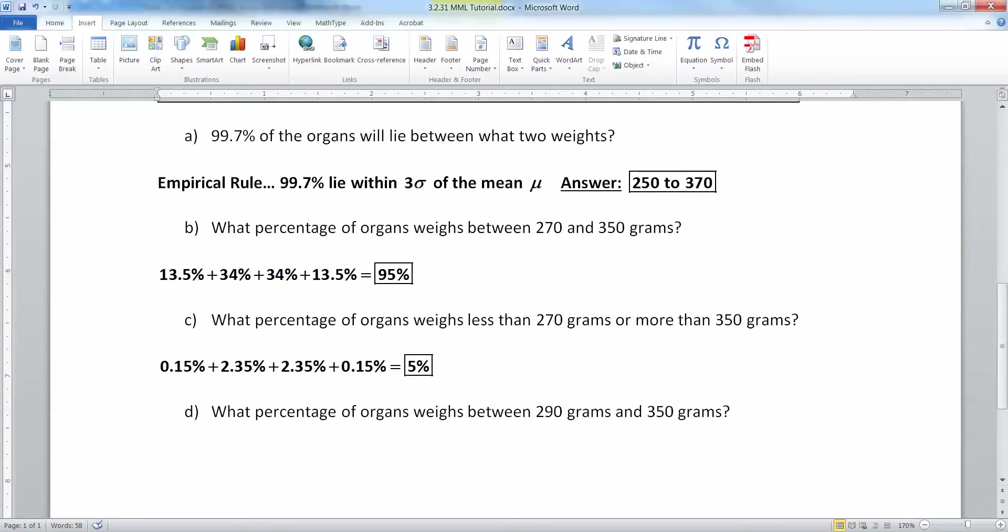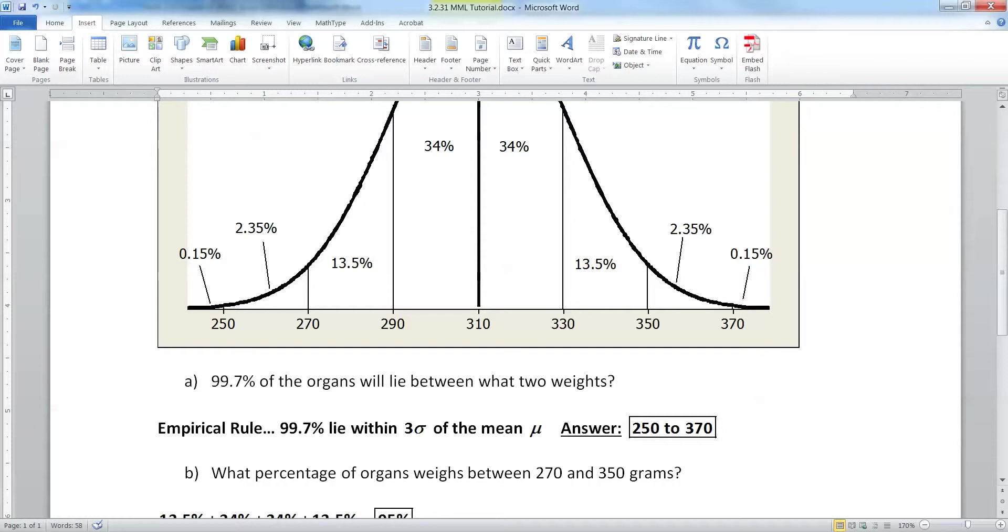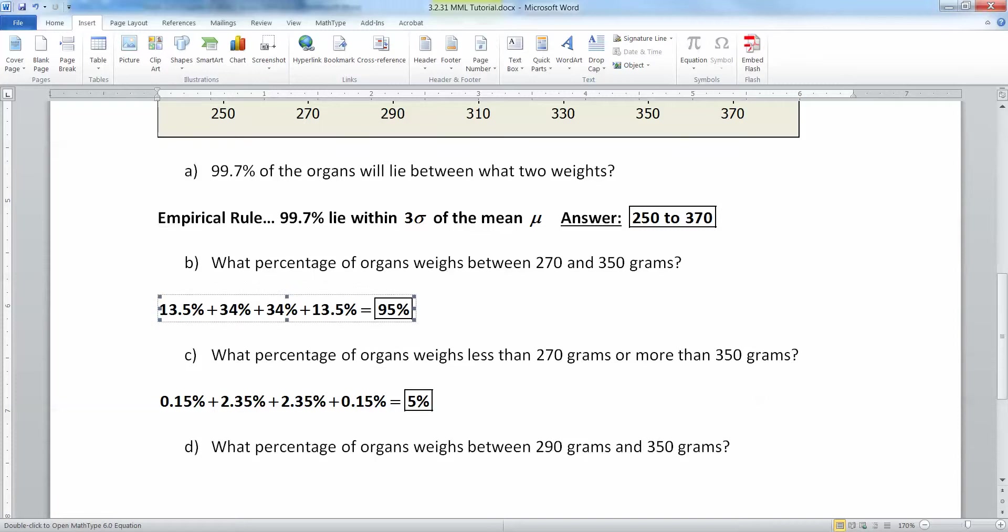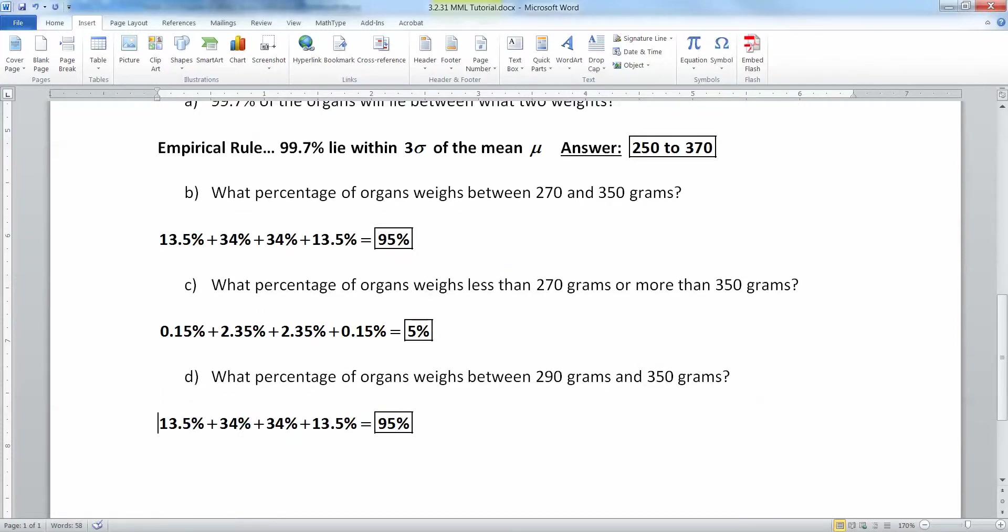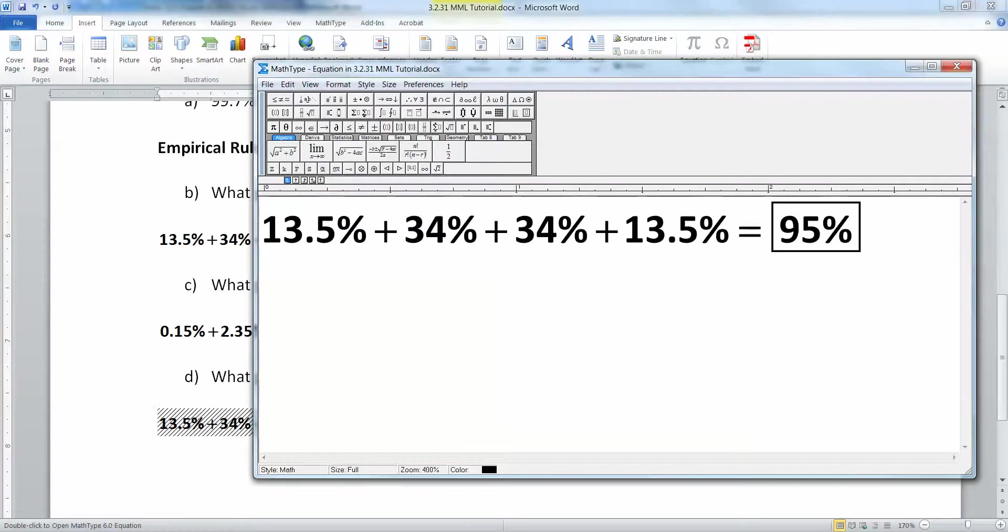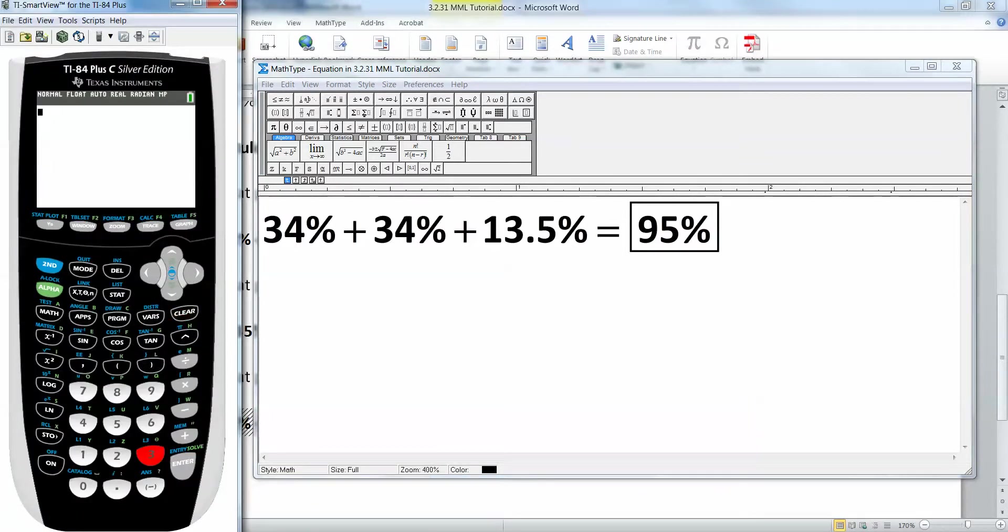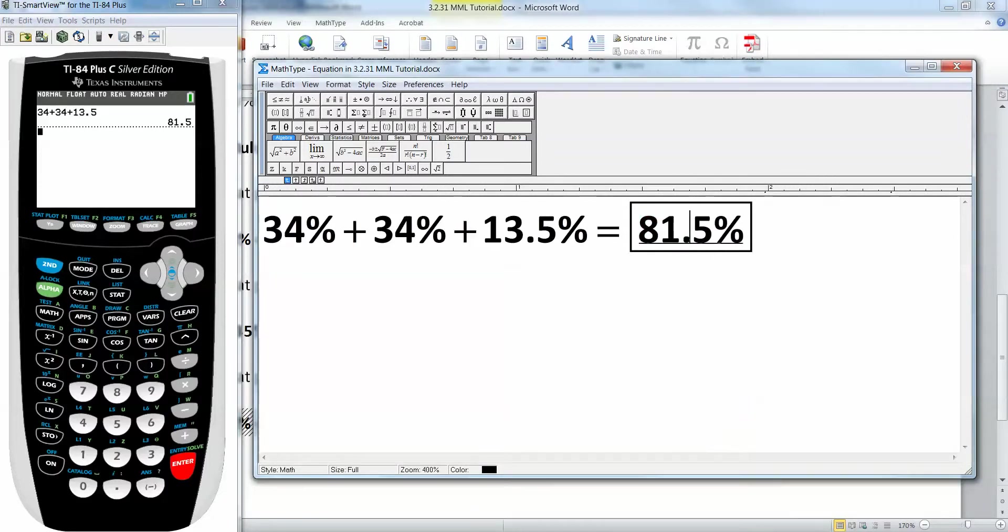Last but not least, what percentage of organs weighs between 290 and 350? You start at 290 and move to the right to 350. So that's 34 and 34 and 13.5. I want to start at 34, then the next section's 34, and then I want to end at 13.5. Let's grab a calculator. 34 plus 34 plus 13.5 makes 81.5%.